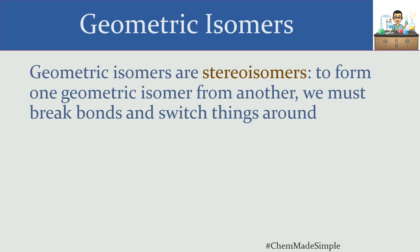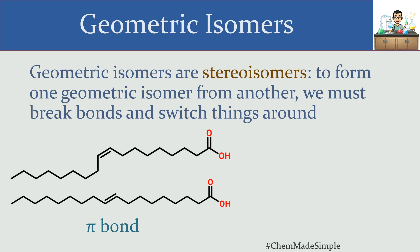Geometric isomers are a type of stereoisomer. Stereoisomers are ones in which we have to break apart a bond and reform it elsewhere in order to convert one instance of that stereoisomer to the other. The bonds we could break to form one stereoisomer from another, with respect to geometric isomers, are either a pi bond or a ring.